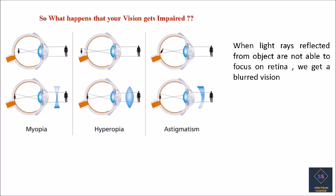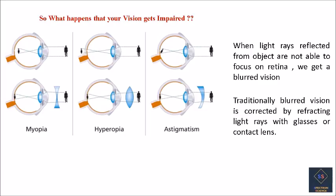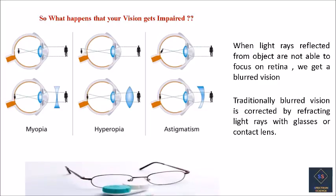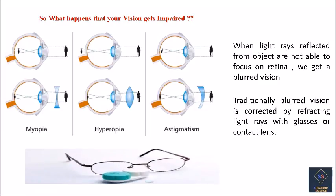When light rays reflected from objects are not able to focus on the retina, we get a blurred vision. Traditionally, blurred vision is corrected by refracting light rays with glasses or contact lenses.